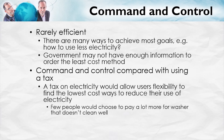Some of us would turn down lights. Some of us would turn down thermostats. Some firms would change their production processes a lot; others would change their production processes just a little bit. Each one of us would access our own information, and in this way, with much greater flexibility, we could reduce electricity consumption by exactly the same amount as the command and control approach, but at much lower cost. Think about it — how many people would choose to reduce electricity by paying a lot more for a washing machine that doesn't clean very well?